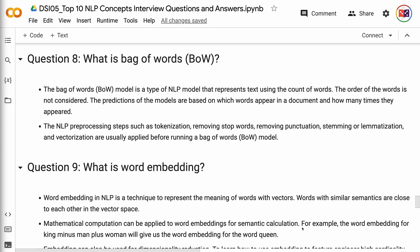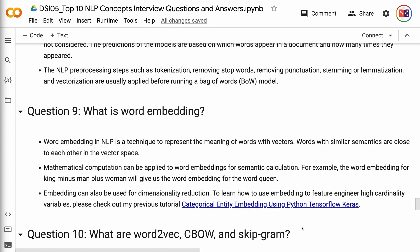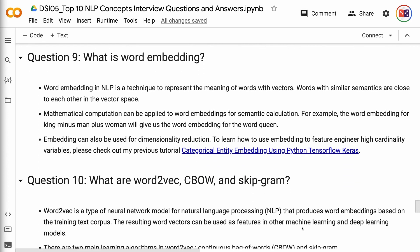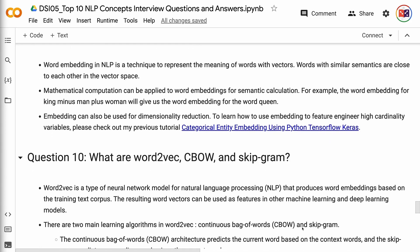Question 9: What is word embedding? Word embedding in NLP is a technique to represent the meaning of words with vectors. Words with similar semantics are close to each other in the vector space. Mathematical computation can be applied to word embeddings for semantic calculation. For example, the word embedding for king minus man plus woman will give us the word embedding for the word queen. Embedding can also be used for dimensionality reduction. To learn how to use embedding to feature engineer high cardinality variables, please check out my previous tutorial Categorical Entity Embedding using Python TensorFlow Keras. The link for the tutorial will be put in the video descriptions.